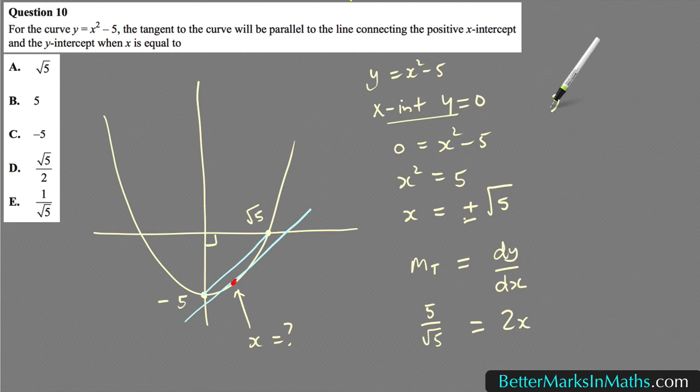So 2x is equal to 5 divided by root 5 is root 5, and then divide both sides by 2, you get x equals root 5 over 2, which is answer D. And D is the correct answer for this one.